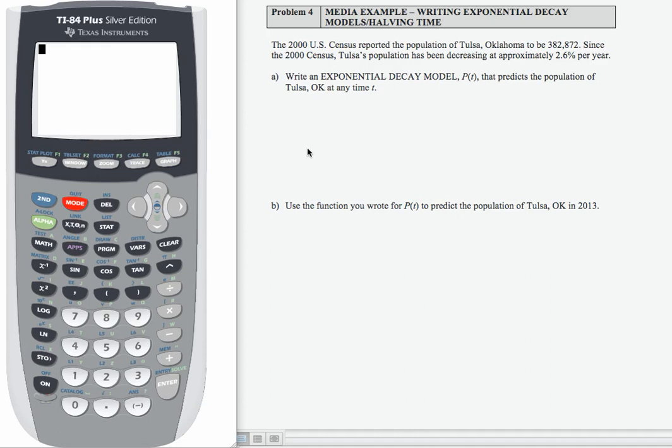In this example, we're going to be writing exponential decay models or models that give us the halving time or half-life. The 2000 U.S. Census reported the population of Tulsa, Oklahoma to be 382,872. So that was in 2000.